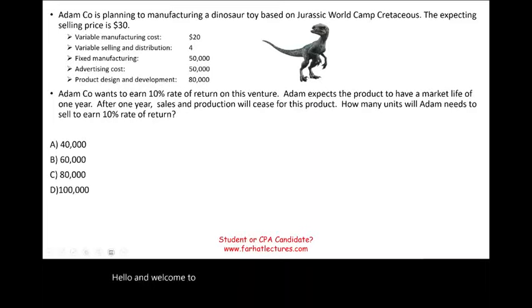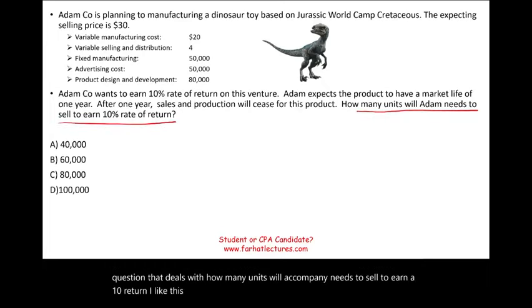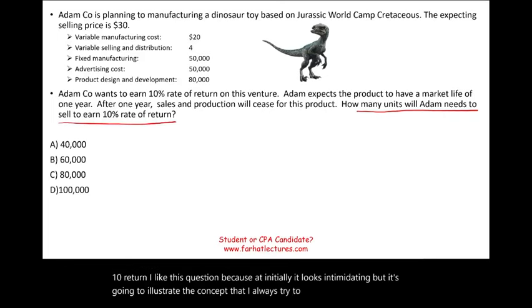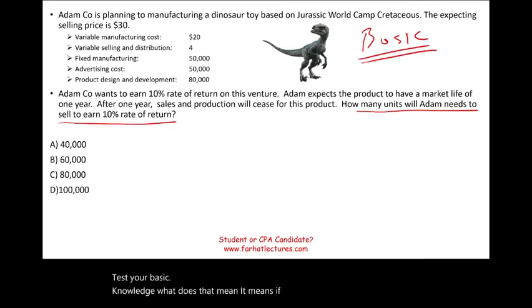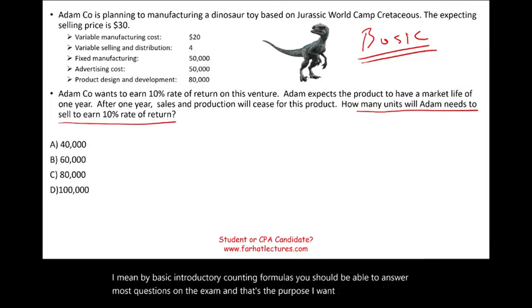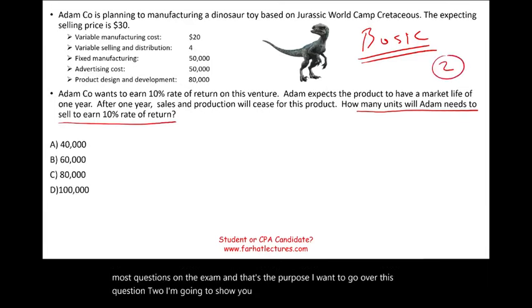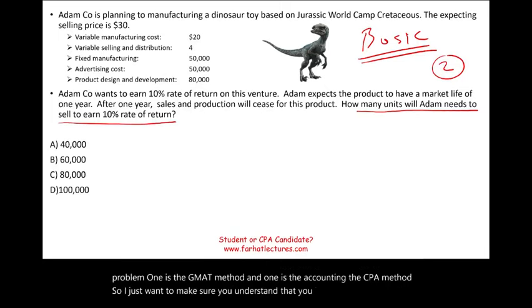Hello and welcome to this session in which we look at a CPA exam question that deals with how many units a company needs to sell to earn a 10% return. I like this question because initially it looks intimidating, but it illustrates the concept that the CPA exam tests your basic knowledge. If you know your basic introductory accounting formulas, you should be able to answer most questions on the exam. I'm going to show you two methods to solve this problem: the GMAT method and the accounting, or CPA, method.